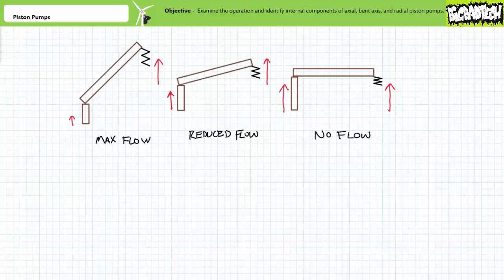Finally, when the piston exerts equal force as the spring, the swash plate is no longer held at an angle and there exists no volume differential. Displacement per revolution is zero and flow stops. In summary: maximum angle, maximum flow; less angle, less flow; no angle, no flow. Simply by varying the angle of the swash plate, a variable displacement piston pump can vary the displacement per revolution and directly control flow rate.